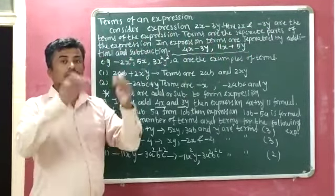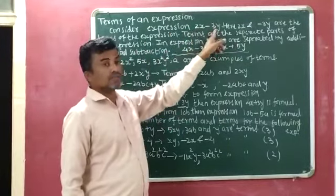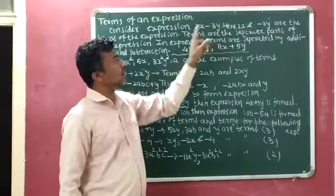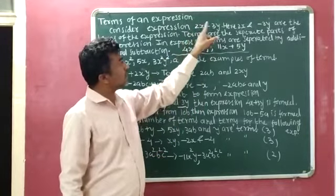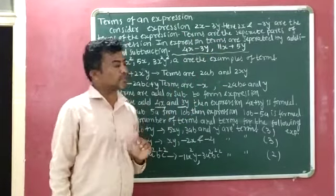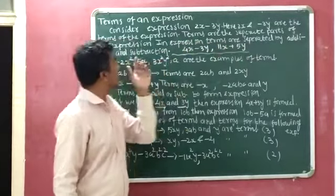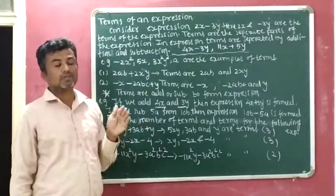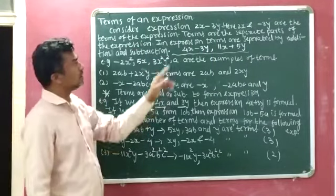Terms are the separate parts of the expression. In 2x minus 3y, there are two terms: 2x and minus 3y, which are the separate parts of the expression. In an algebraic expression, terms are separated by addition and subtraction.